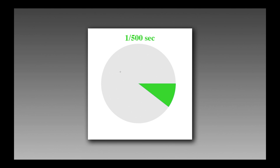When you look at this, this is a shutter speed of one five-hundredth of a second, and you can see there's a green slice of pie in there. If we let more light in, so I decrease the shutter speed to one two-fiftieth of a second, we get a bigger slice of pie. So more light is coming in, we have a bigger slice of pie.